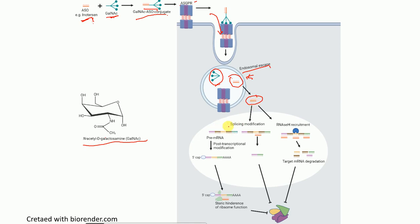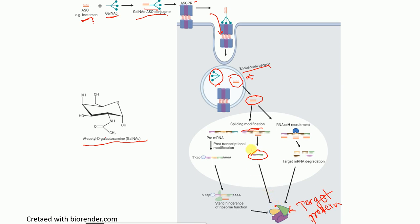Once outside the endosome, there are three different mechanisms by which antisense oligonucleotides can function. The first mechanism is splicing modification: the antisense oligonucleotide modifies splicing of the target mRNA, creating a splice variant that inhibits the production of the target protein.